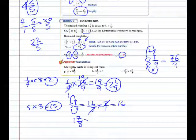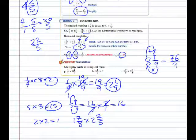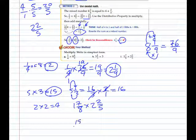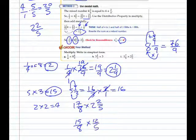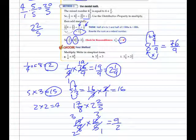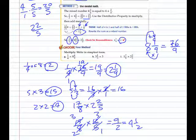Example I: one and seven-eighths times two and two-fifths. A simple estimate: two times two is four. We rename both as improper fractions: one and seven-eighths becomes 15 over eight, and two and two-fifths becomes 12 over five. We can simplify: divide by five here and here, and by four here and here. Instead of 15 times 12, we get three times three, which is nine over two — giving us an answer of four and a half. Clearly in agreement with our estimate.